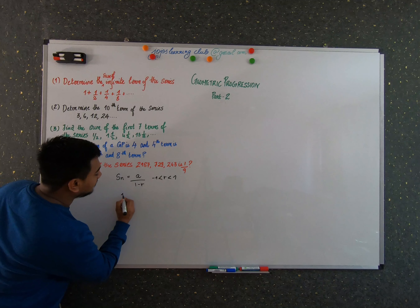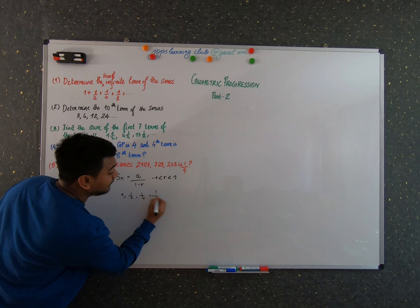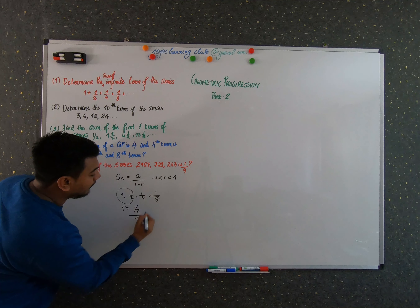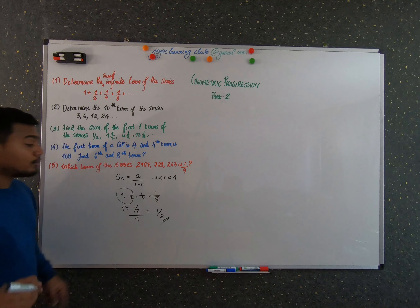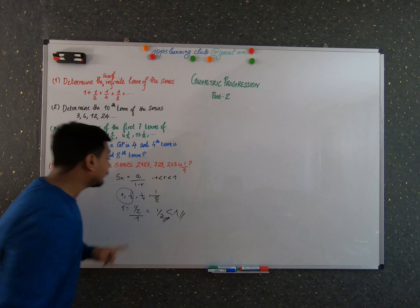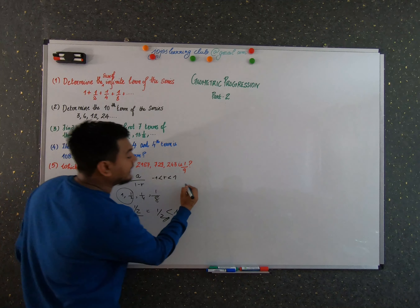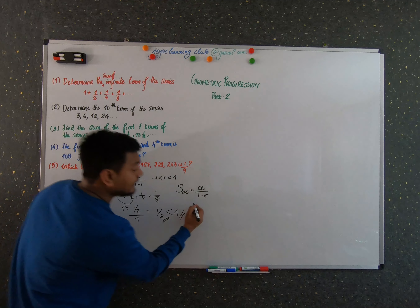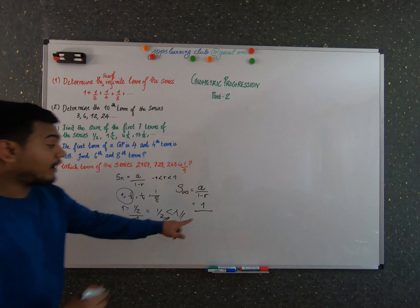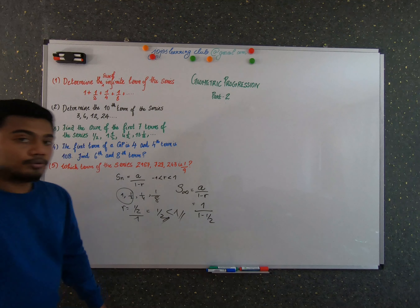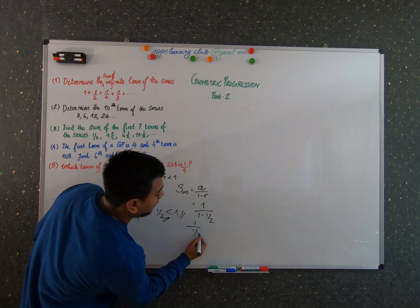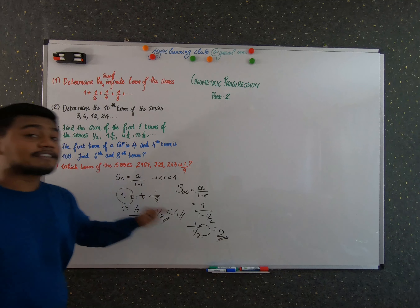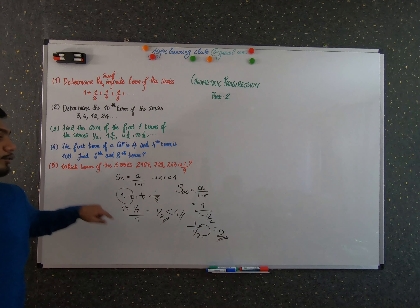The sequence is: 1, 1/2, 1/4, 1/8, ... The common ratio r = (1/2) / 1 = 1/2, which is less than one, so the formula applies. S_∞ = a / (1 − r) = 1 / (1 − 1/2) = 1 / (1/2) = 2. So the sum of the infinite series is 2.